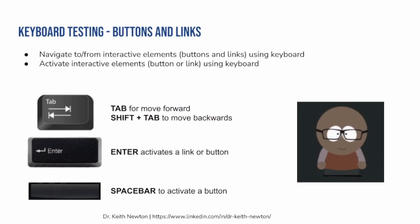We will navigate to and from interactive elements using only the keyboard. The second thing that we'll do is that we will activate those interactive elements — either a button or a link — using just the keyboard. We are going to use the tab key to navigate forward to an interactive element. We'll use shift plus the tab key to move backwards away from an interactive element. We're also going to use the enter key, which will activate either a link or a button. We'll also use the space bar, but the space bar will only activate a button.